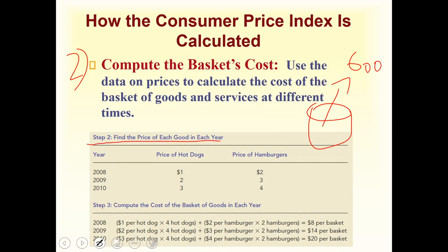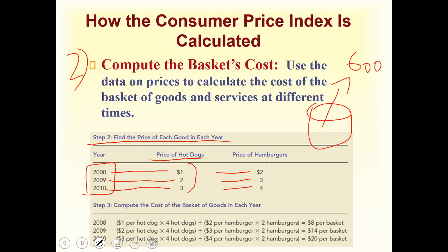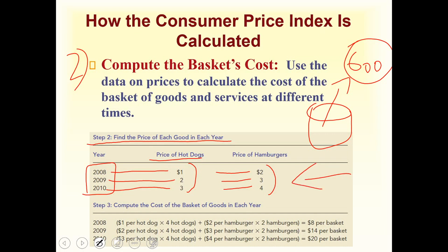In step two, we find the price of each good in each year. We have three years: 2008, 2009, and 2010. The price of hot dogs increased by one dollar each year, and similarly, the price of hamburgers also increased by one dollar each year. In the real world this table would have around 600 goods, but the process is the same.